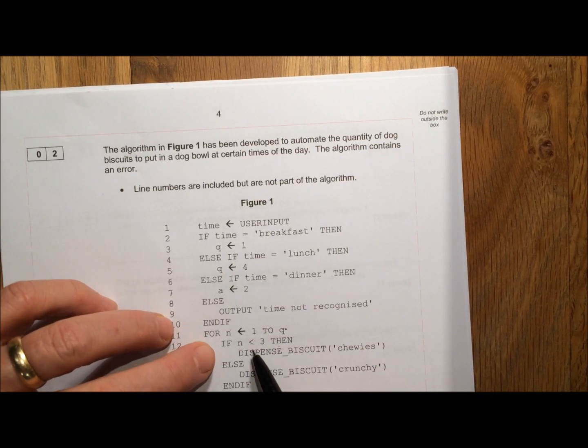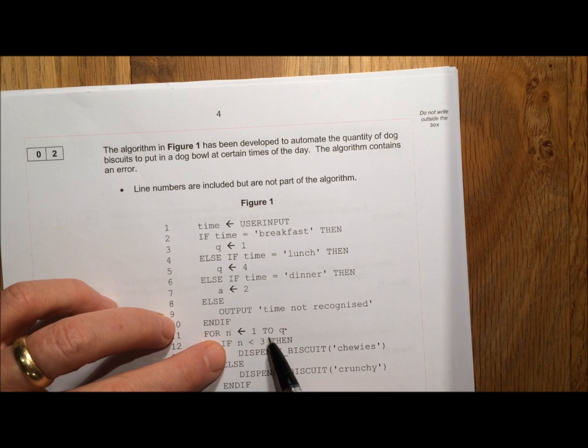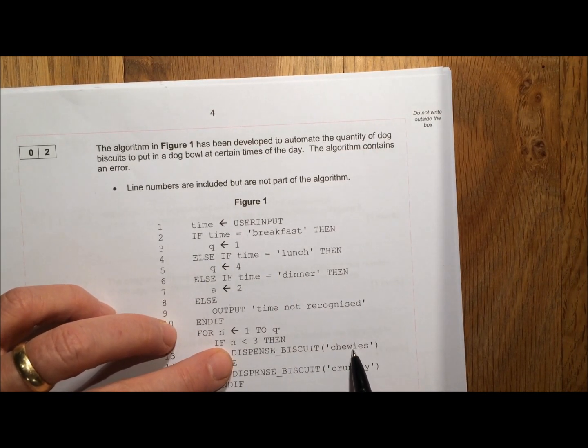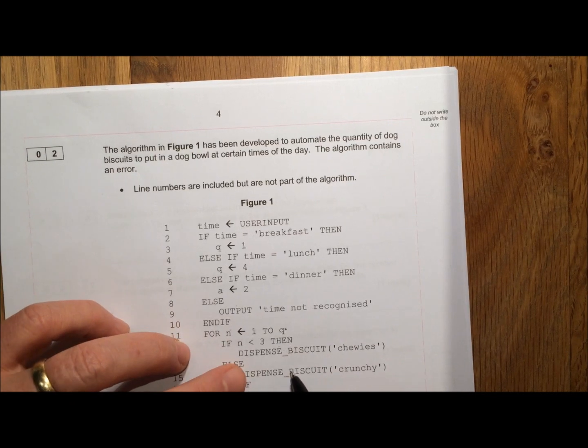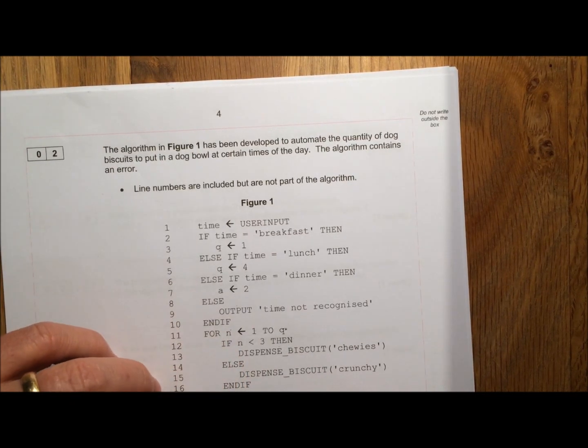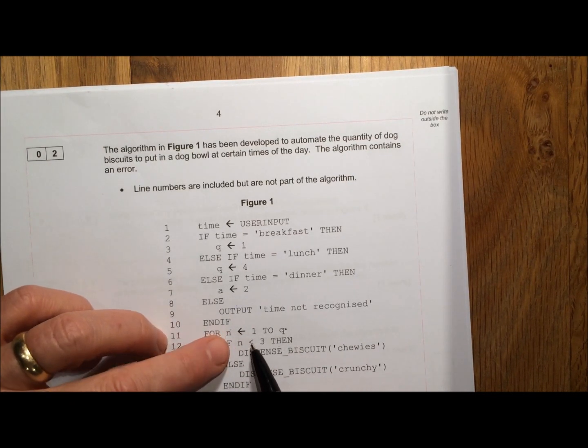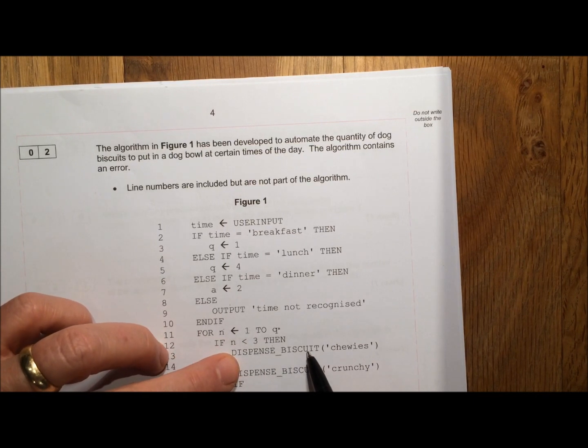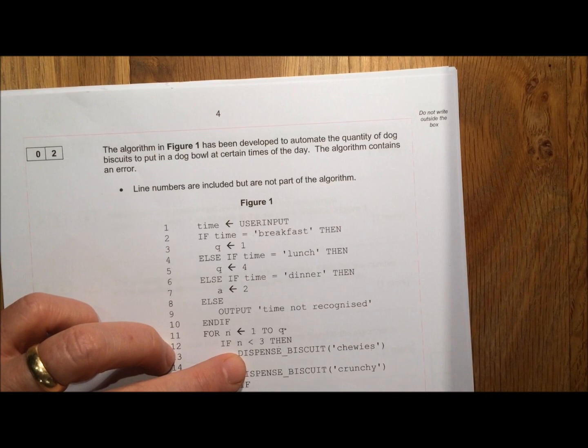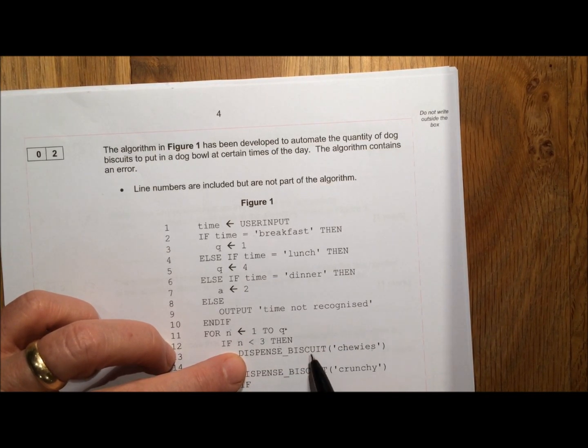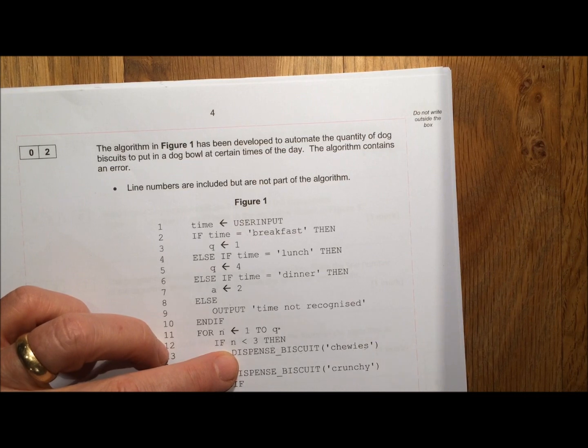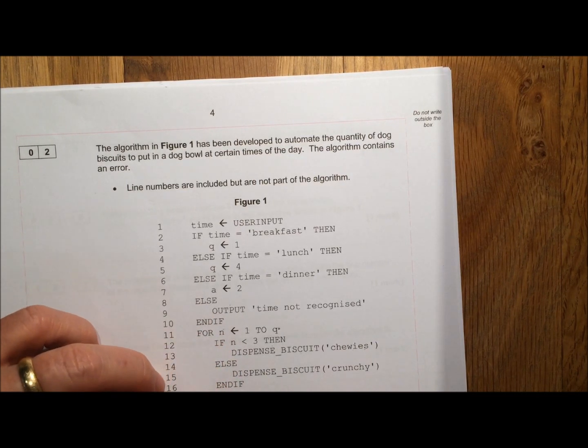So N is 1. Is N less than 3? Yes, so we'll call dispense biscuits with chewies. That's once. It's not going to do that because N was less than 3, back we go. N is now 2. Is 2 less than 3? Yes it is. So we're going to dispense biscuits chewies. Again we're going to do the dispense biscuits subroutine with the parameter chewies. That's twice.